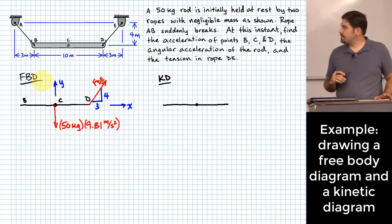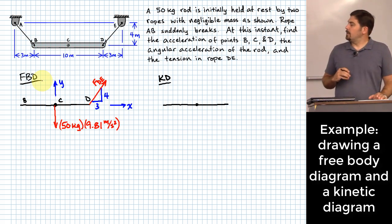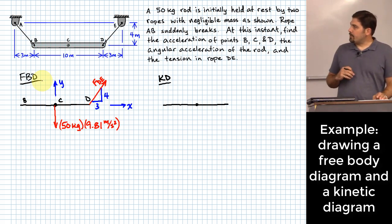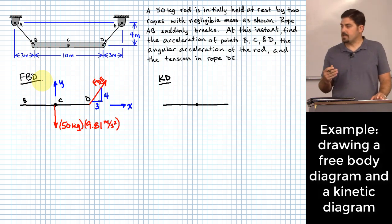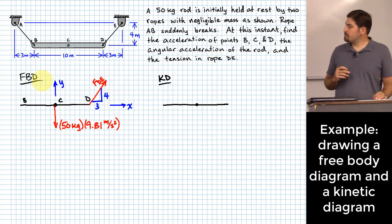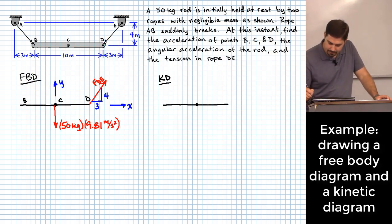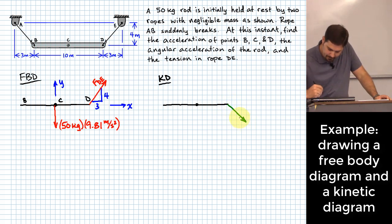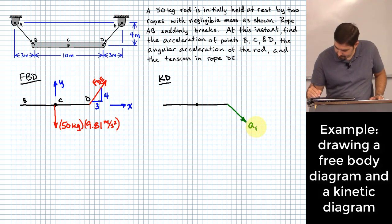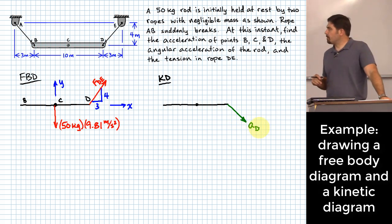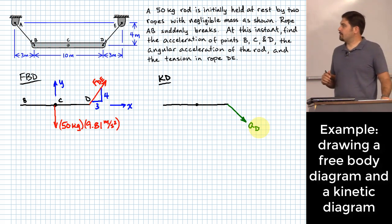The most interesting point on the kinetic diagram is point D. As long as rope DE does not go slack, point D will begin to accelerate in a direction normal to the rope direction. We call that acceleration A_D, and since it's perpendicular to the rope, we swap rise and run: a rise of 3 and a run of 4.